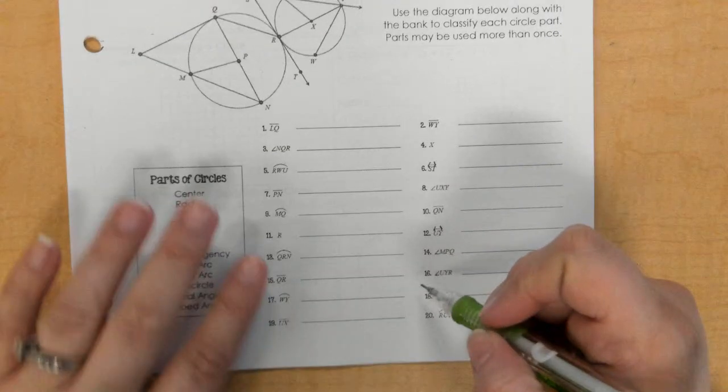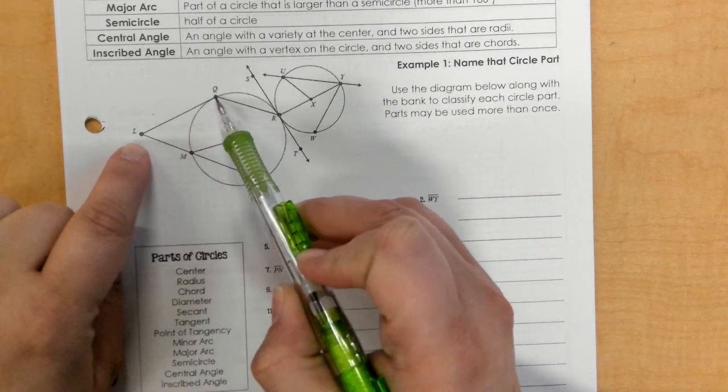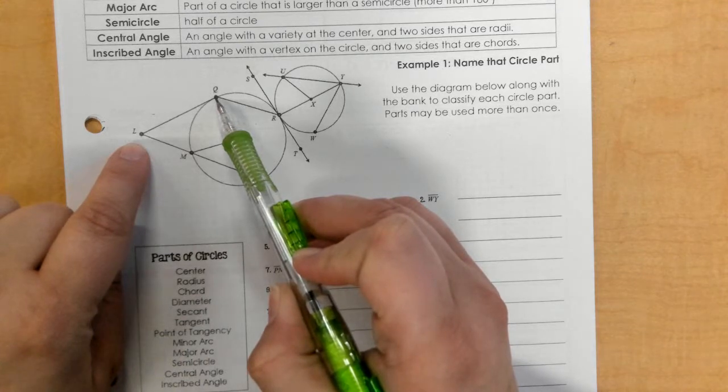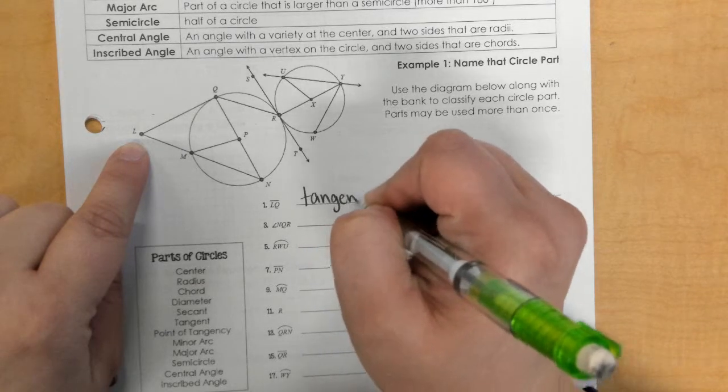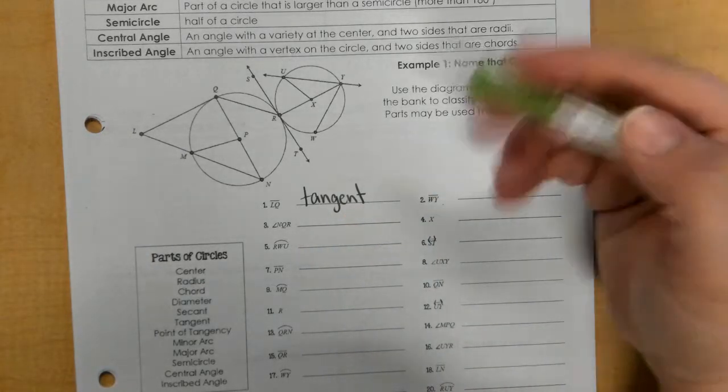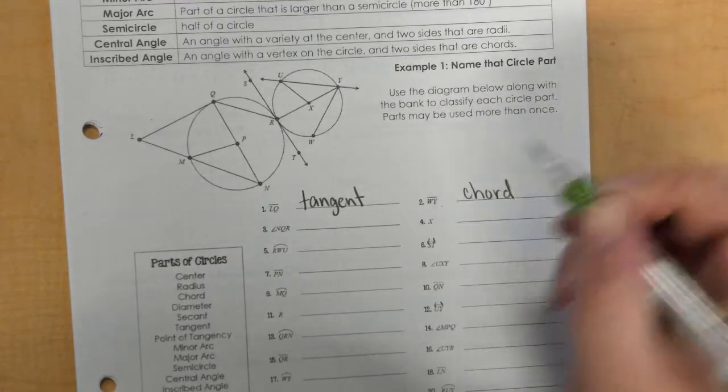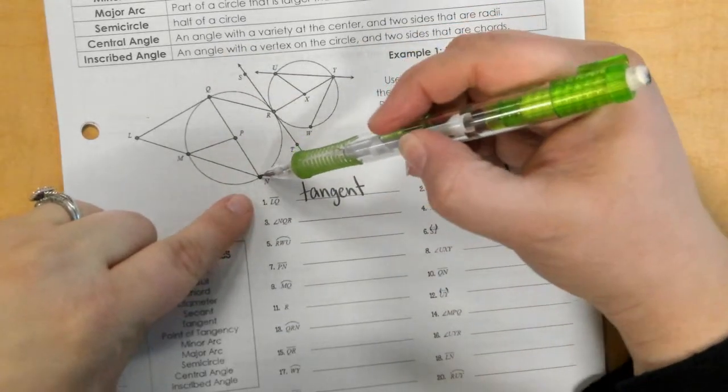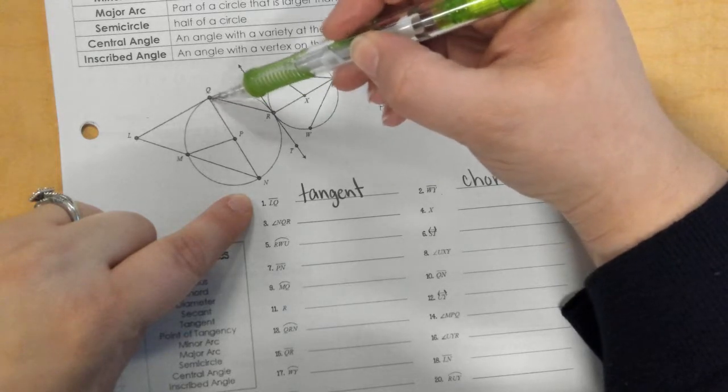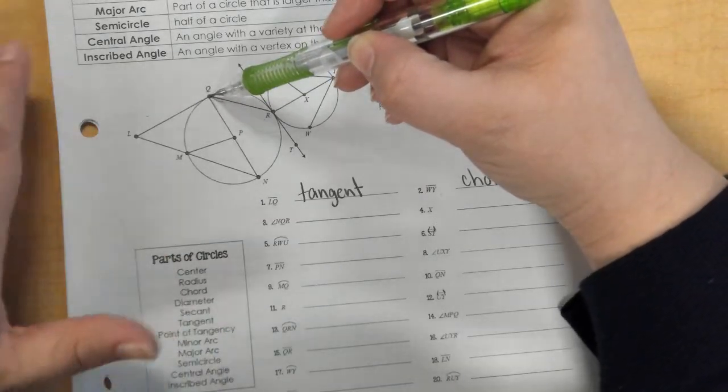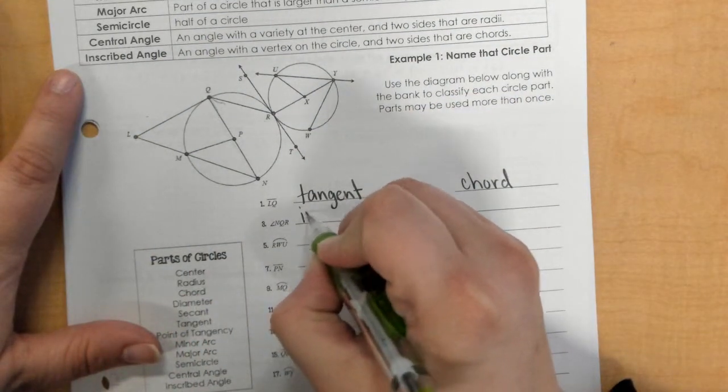Okay, we should do arrows. So for number one, LQ, LQ is right here and as you can see it touches the point on the outside, one point on the outside, one point, so that's a tangent. Number two, WY, that's a chord. Angle NQR, so this angle here, we're looking at this right here. If the vertex is on the circle, that's called an inscribed angle. Okay, so we're going to go with inscribed.